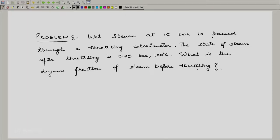We have wet steam at 10 bar passed through a throttling calorimeter. This is the device that we are going to discuss. The state of steam after throttling is 0.75 bar, 100 degrees centigrade. What is the dryness fraction of steam before throttling?